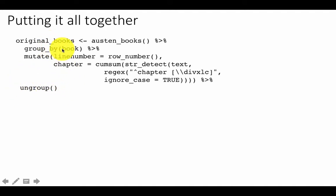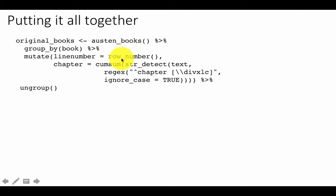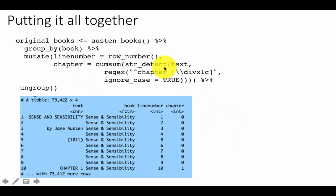Finally, we call 'ungroup()' because when you use group_by without summarize, the grouping remains on the data frame. We used group_by here not for summarization but to compute row numbers and chapter numbers within each book group. After ungrouping, the result shows line 1, chapter 0 for the title page, then line 10, chapter 1 when the first chapter begins, and so on across all of Jane Austen's books.